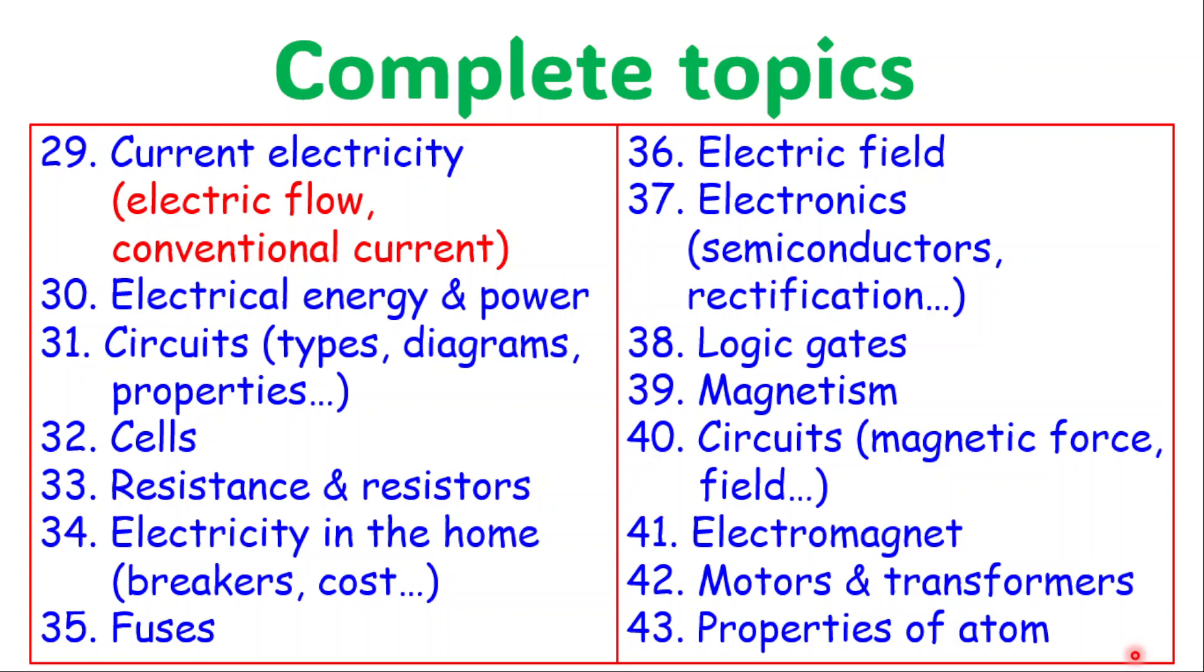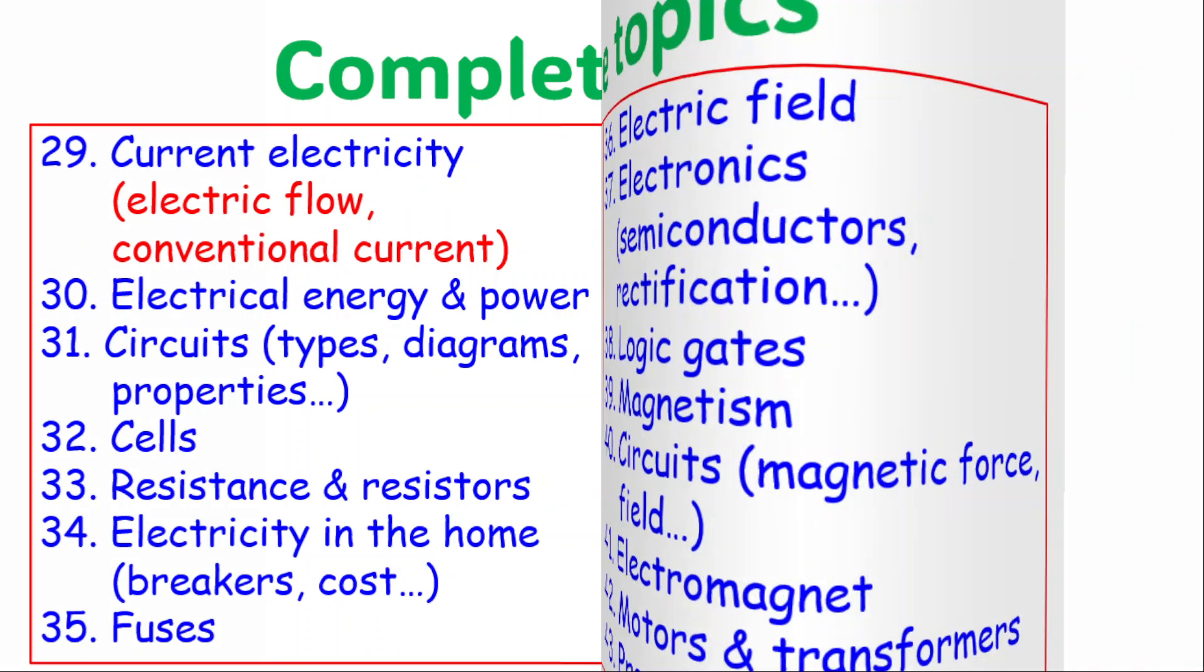I am looking at cells, resistance, resistors, electricity in the home, and you can look at breakers and cost of electricity and so on. Fuses, electric field, electronics, and under electronics we talk about semiconductors and rectification, logic gates, magnetism, circuits, and we look at circuits, look at magnetic force and also field, electric field and magnetic field in circuits. Electromagnet, motors and transformers, and motors and transformers will be in my prediction because I have a real strong feeling towards those properties of atom. And of course that is related to radioactivity as well.